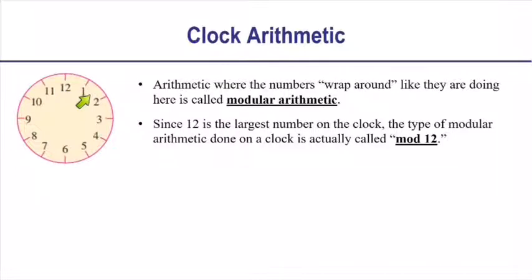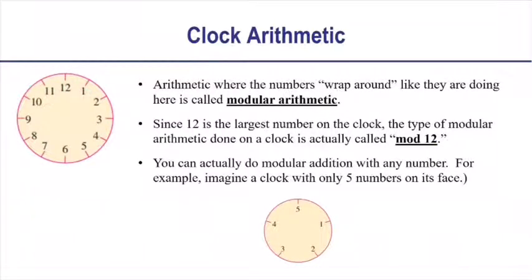Since 12 is the largest number on the clock, the type of modular arithmetic we do with a regular clock face is called arithmetic mod 12. The 12 tells us what the biggest number is. You can actually do modular arithmetic with any number — imagine a clock that only had 5 numbers on its face; that would let us do arithmetic mod 5. All the problems in this section are mod 12, but keep in mind it doesn't always have to be mod 12.